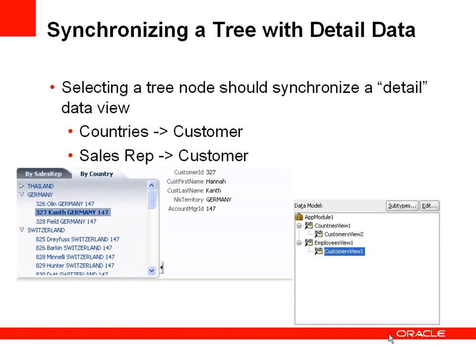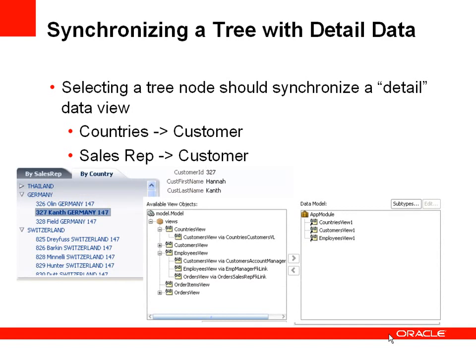You might consider this a master-detail data model with countries and customers, or employees and customers, but there's a better way. The data model has top-level view object instances of countries, customers and employees, where the countries and employees views have accessors that allow those view objects to access the customers for that particular view. You can see those accessors available as part of the employees and countries view.